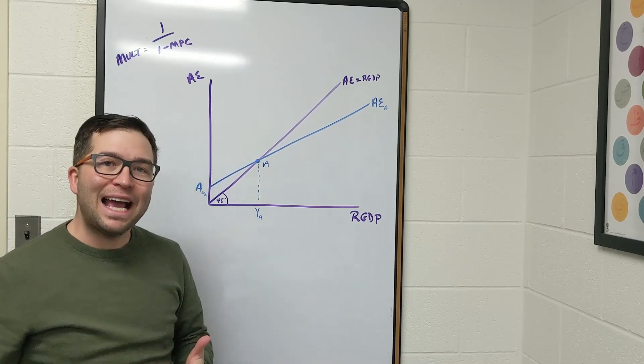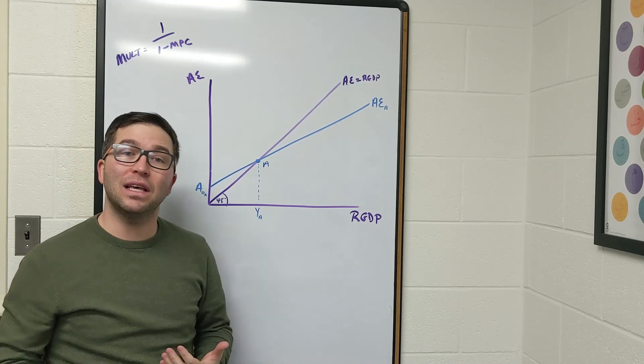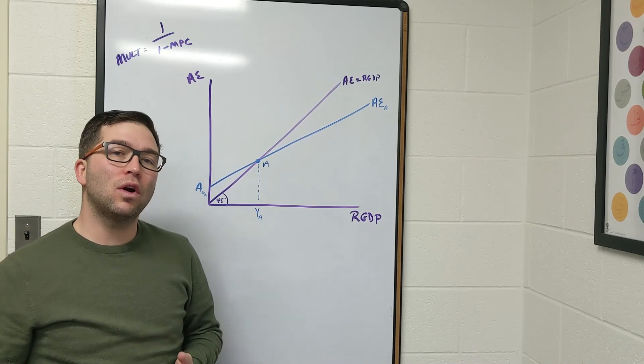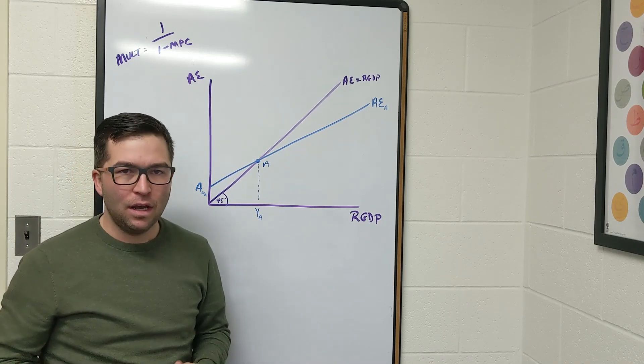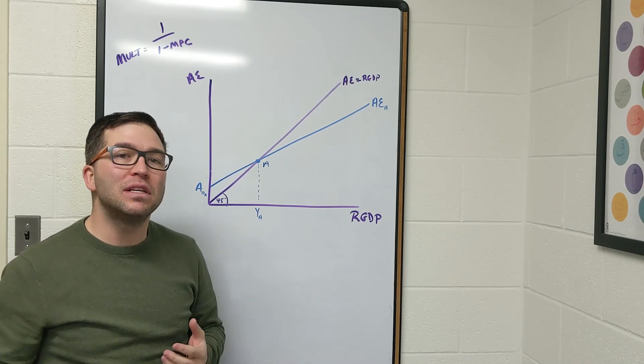Hey everybody and welcome to the last video for this lesson. What we're going to do is show via a graph the multiplier effect from when any part of autonomous spending changes.